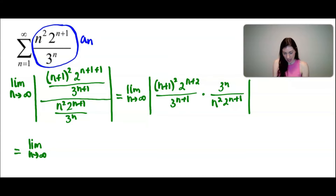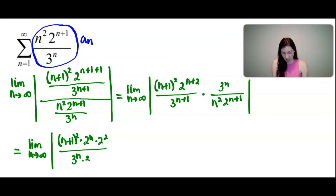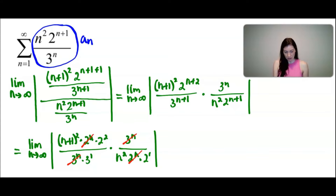Making sure to rewrite that limit and absolute value every time. I'm going to simplify 2 to the power of n+1 as 2 to the n times 2, and similarly 3 to the n+1 as 3 to the n times 3. I can see that the 3 to the n terms cancel, the 2 to the n terms cancel, and one of the 2s cancels — so that simplifies quite a lot.